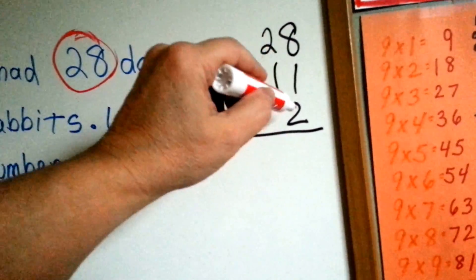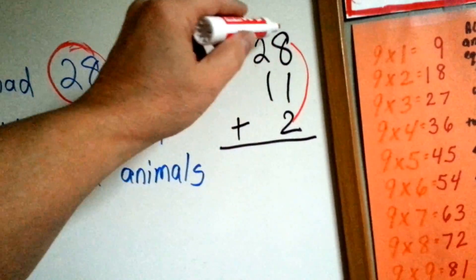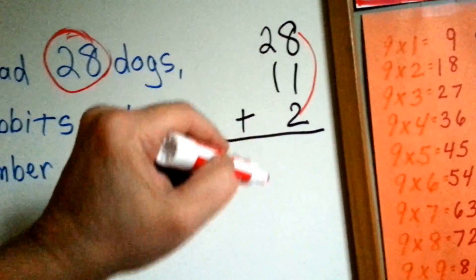Eight plus one is nine, ten, eleven. But you know what? Look, here's a compatible pair. If we added eight, nine, ten, we would have had a ten right away, right? And then we could have said eleven.